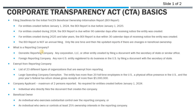The BOI report is not an annual filing, so you don't have to submit it every year. Once you submit it, you're pretty much done — unless at a later date there's a change in beneficial ownership, in which case you have to file an updated report. If there are no changes, you don't have to keep submitting.